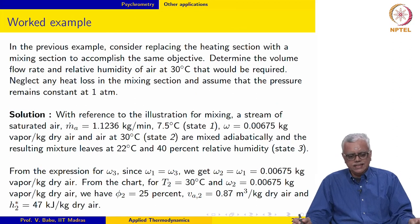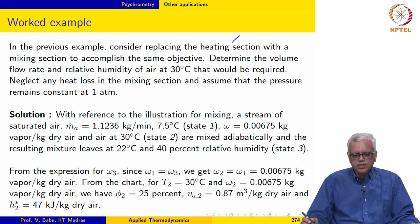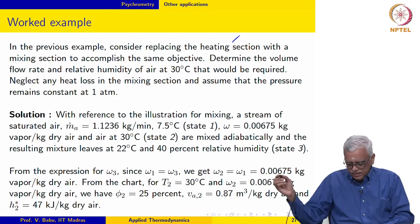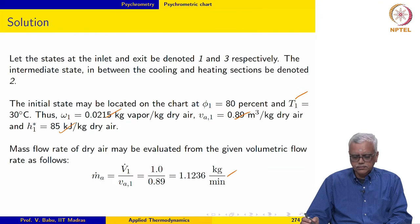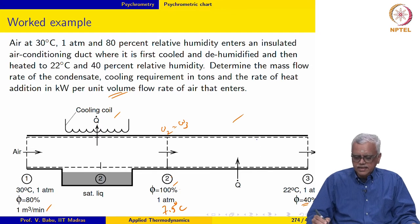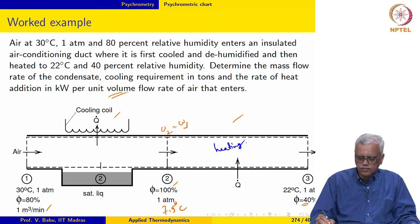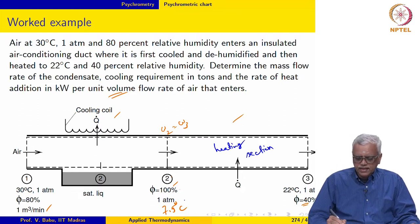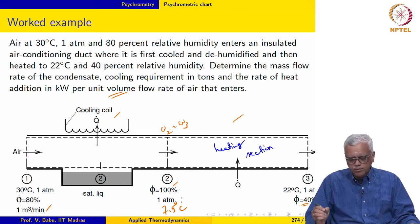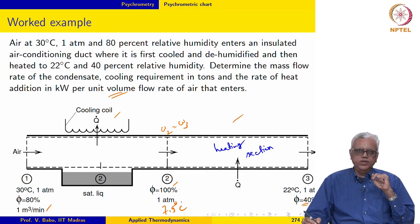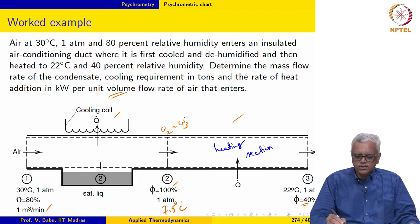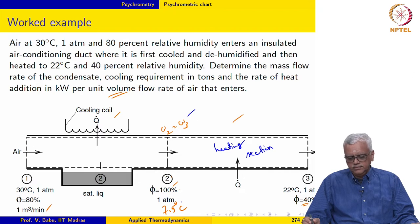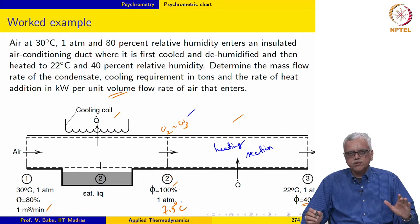Let us now go through a worked example. In the previous example, consider replacing the heating section with a mixing section to accomplish the same objective: air at 100 percent relative humidity and 7.5 degrees Celsius enters the mixing section, and we want air to leave at 22 degrees Celsius and 40 percent relative humidity. We impose the same conditions on the mixing section, except that it is adiabatic.